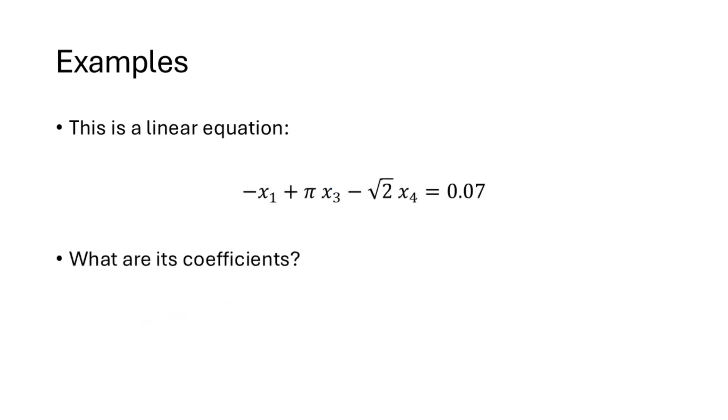Here's another example. What are the coefficients of this linear equation? You might notice that there's no number in front of the x1, but that means there's a 1 there, so the coefficient of x1 is negative 1. The variable x2 is missing, so we could insert it with a coefficient of 0, so the coefficient of x2 is 0, and the coefficient of x3 is pi, and the coefficient of x4 is negative the square root of 2. This illustrates that the coefficients can be 1 or negative 1 or 0, or even irrational numbers like pi or negative the square root of 2.